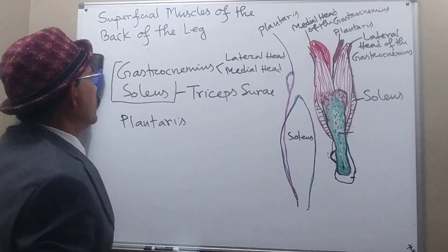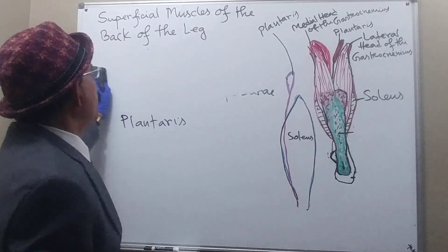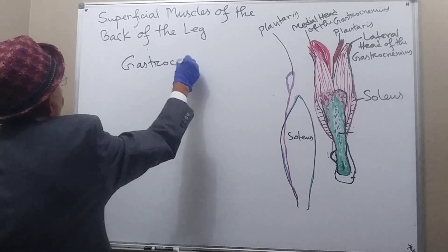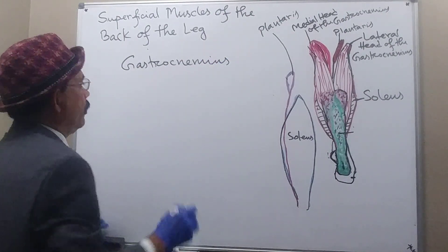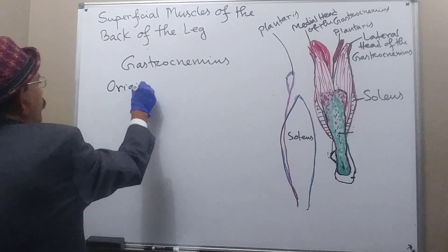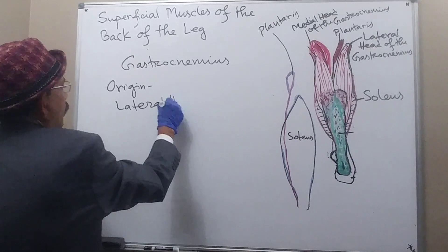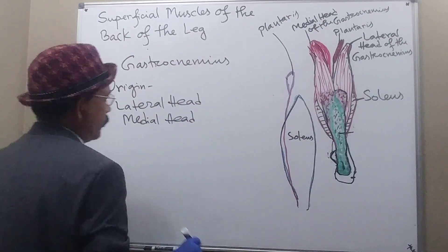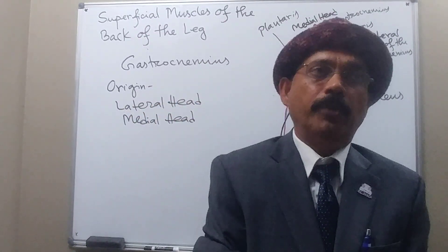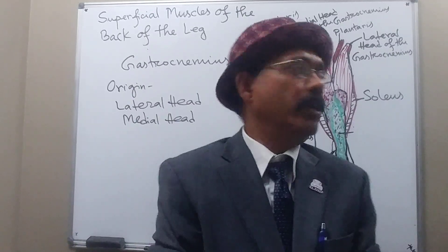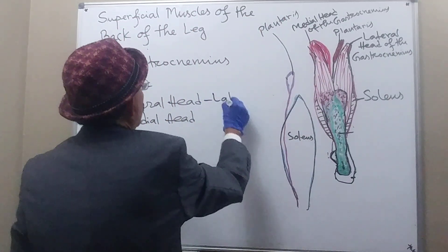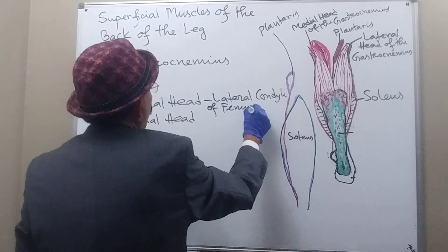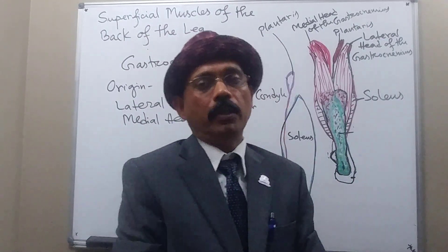Now we go through the origin, insertion, and nerve supply of the superficial muscles of the back of the leg. First, the gastrocnemius muscle. The lateral head originates from the lateral aspect of the lower part of the lateral condyle of the femur. It also takes origin from the lower part of the lateral supracondylar line.